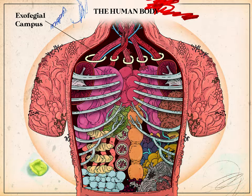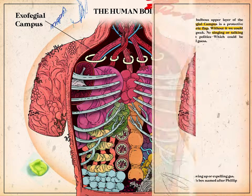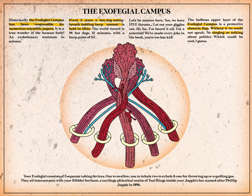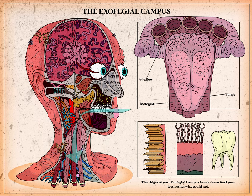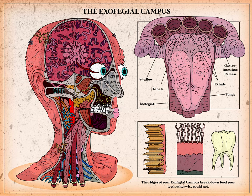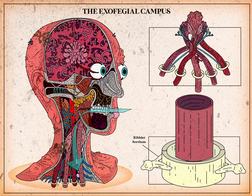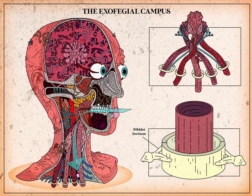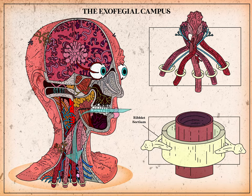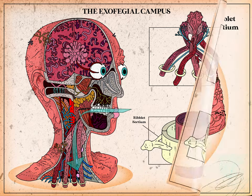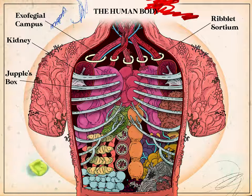Up at the top we have the exophageal campus. Your exophageal consists of five separate tubing devices: one to swallow, one to inhale, two to exhale, and one for throwing up or expelling gas. All these tubes interconnect with your riblet sodium, a cartilage fletical seum of teeth rings inside your Juppel's box, named after Philip Juppel in 1896.